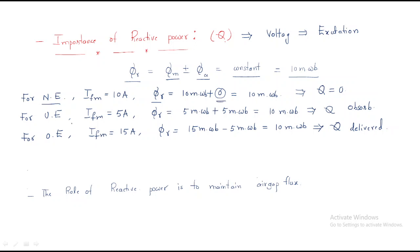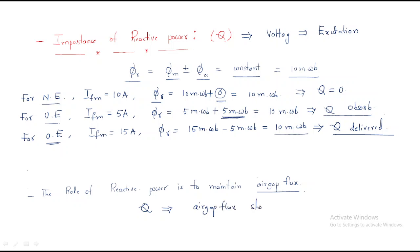To summarize: for normal excitation, the armature flux contribution is zero. For under-excitation, the machine takes field from another machine — reactive power is absorbed. For over-excitation, the main field is high and it must lose flux since only 10 milliweber is required — so reactive power Q is delivered. The role of reactive power is to maintain the air gap flux.